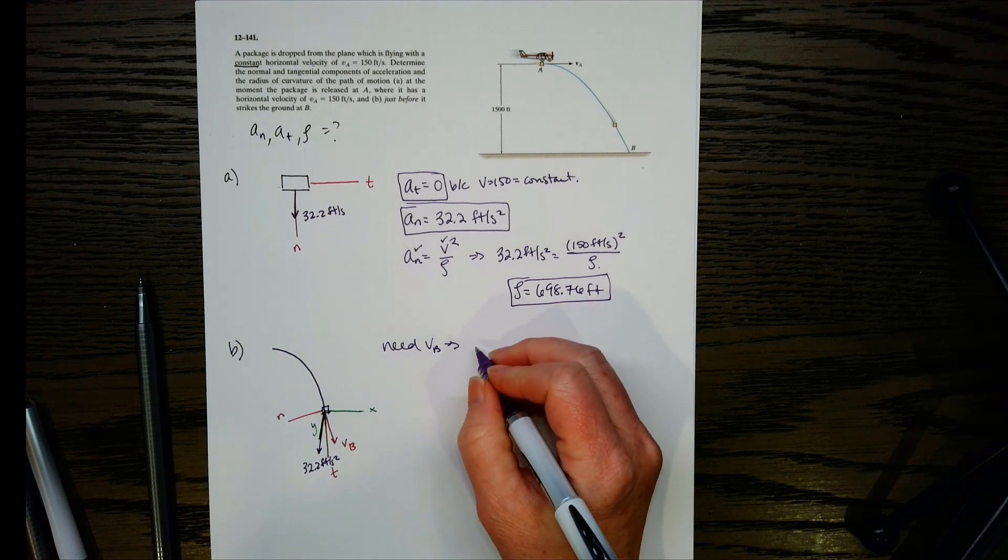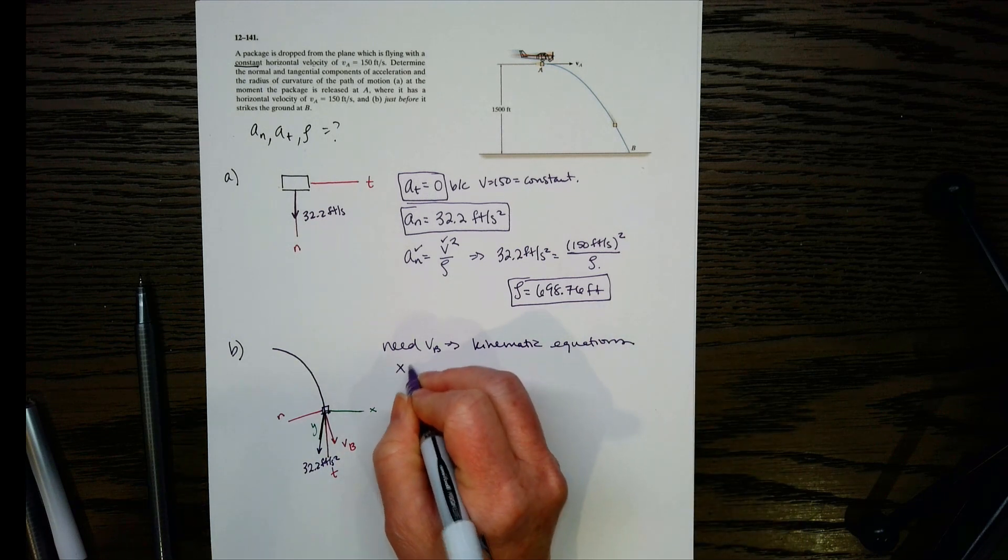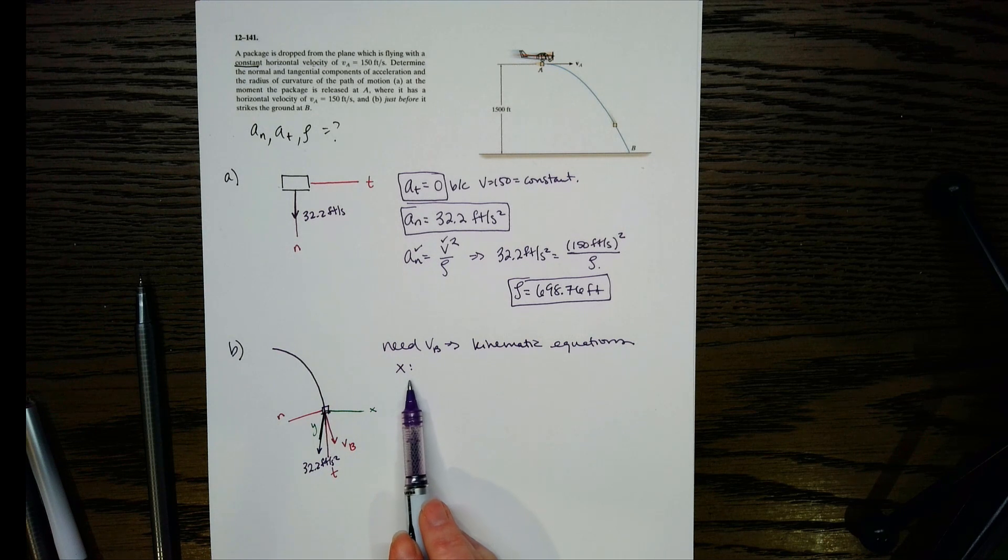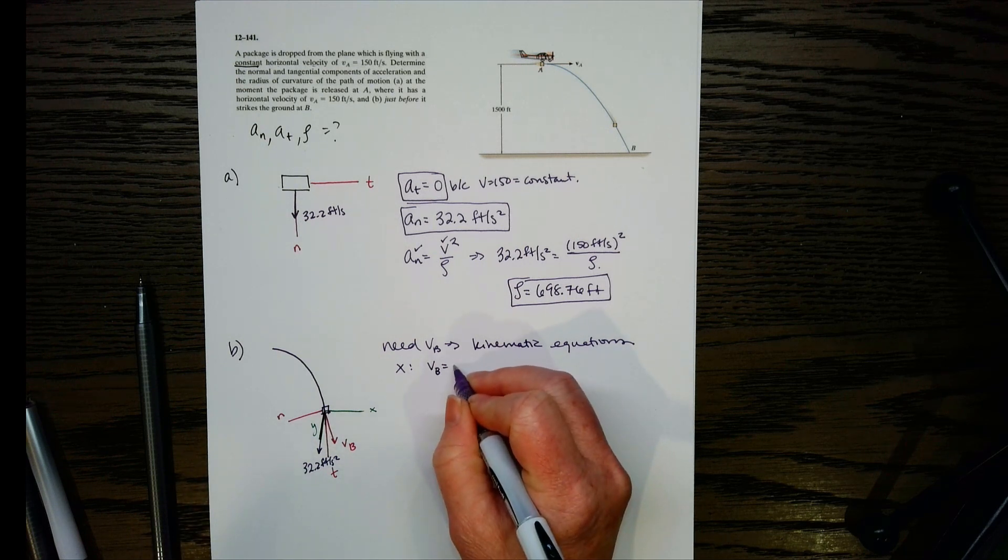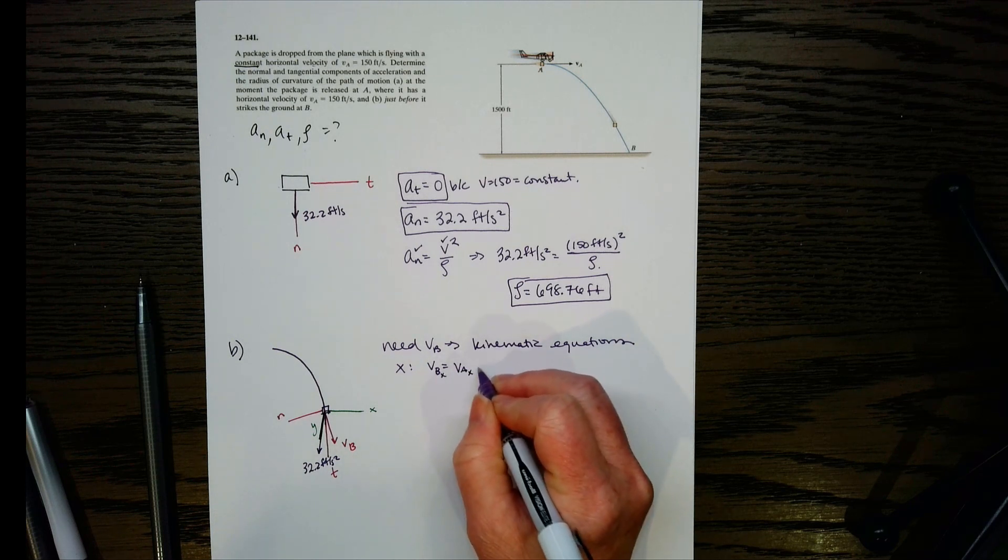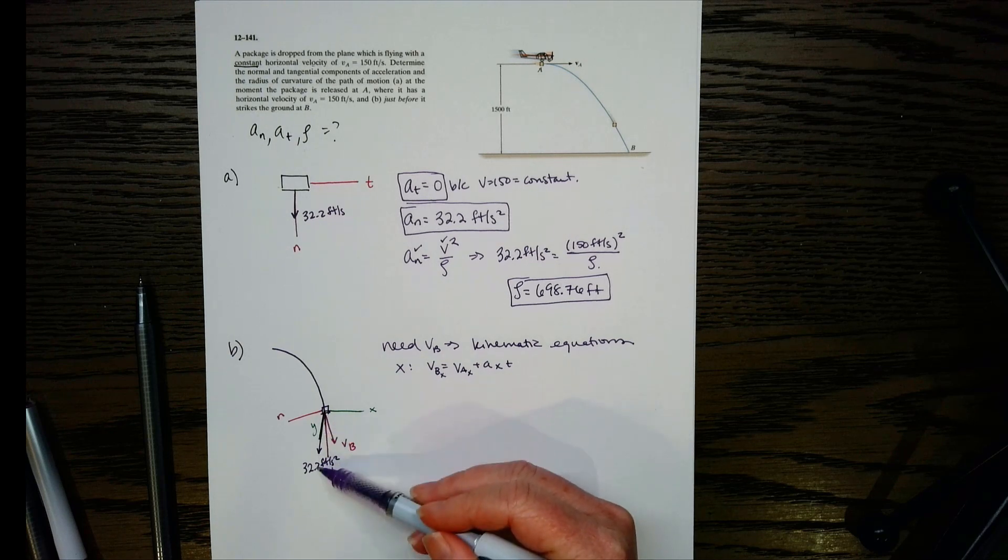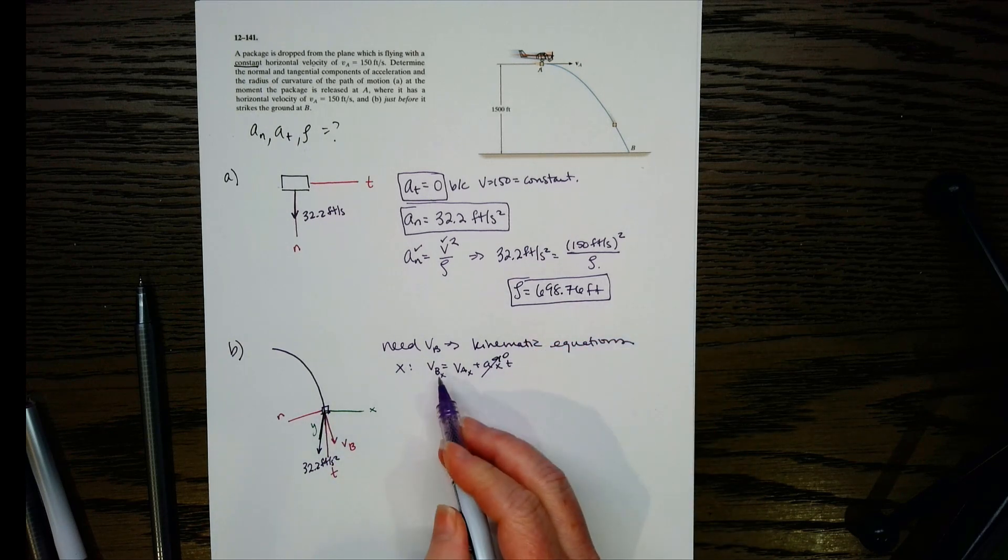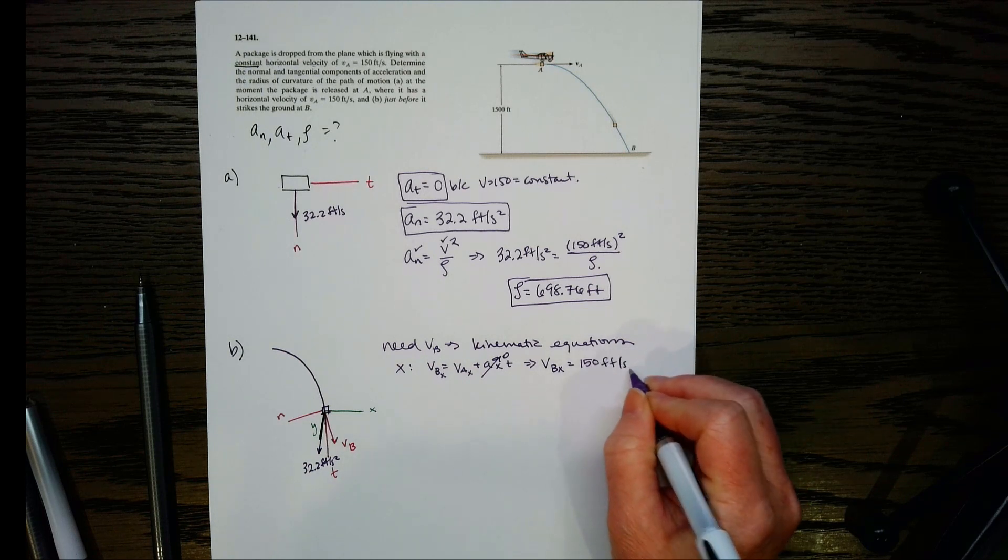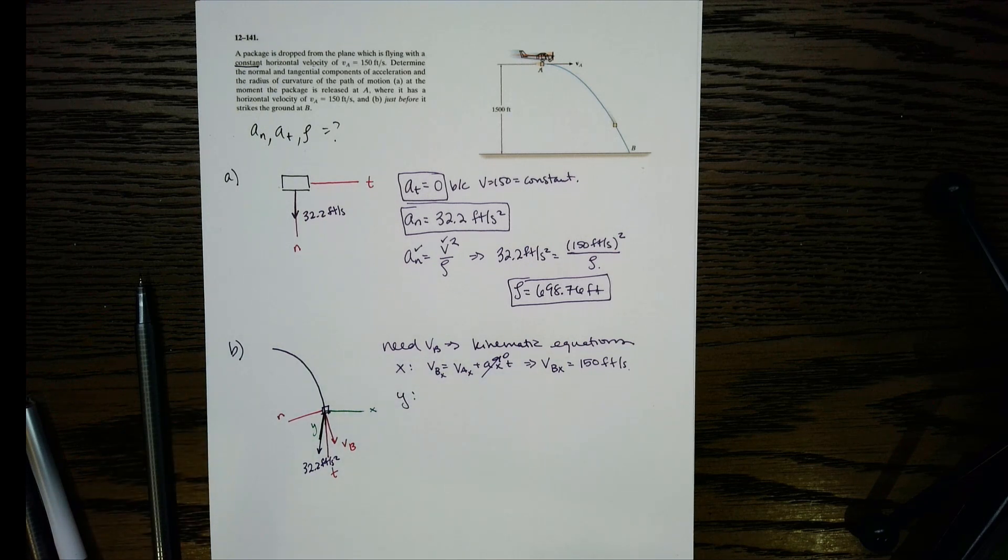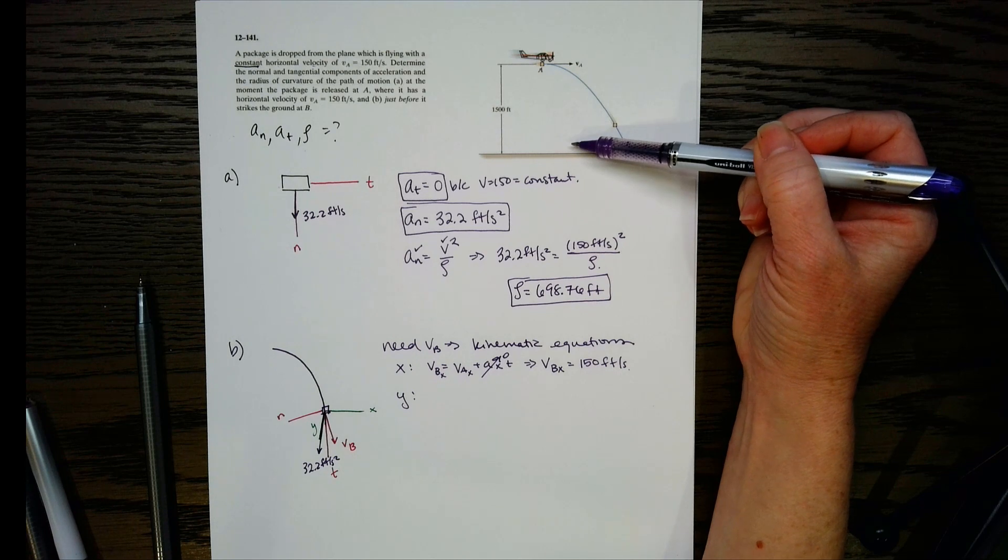Let's label a couple more things. So I've got VB here, and let's put our X and Y frame on here. There would be X, and let's say Y is going down. So now if I've got this VB, that means I've got a VBX and a VBY. So we need VB, and the way we're going to get this is by using our kinematic equations. Let's look at the X direction, then we'll look at the Y direction. So if I want to find my new X component of velocity at B, I've got VB. It's going to equal VA in the X directions, plus AX times T. What is AX? AX is going to be 0, because gravity lies on the Y axis. So this goes to 0, which means VBX has to equal VAX. So that means VBX has to be 150 feet per second.